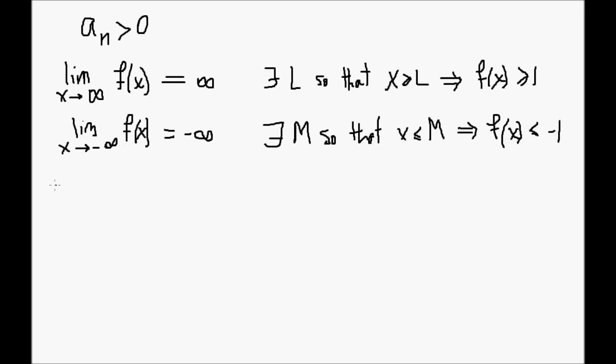So by the intermediate value theorem, because f is continuous, we can apply the intermediate value theorem so that there exists a number c somewhere between M and L so that f(c) is equal to 0.